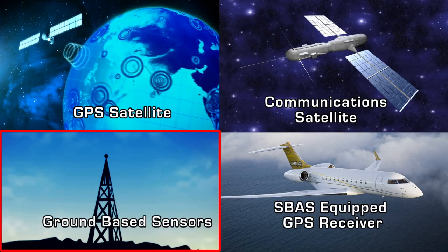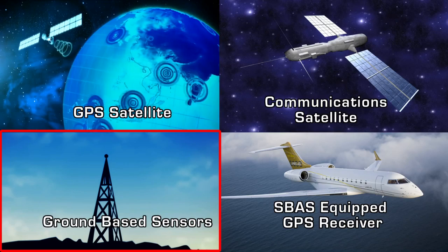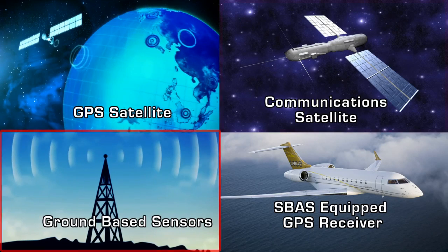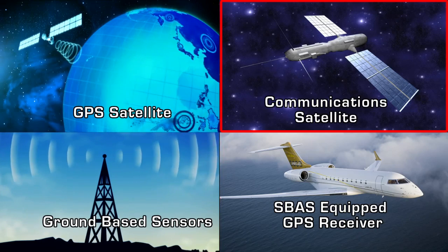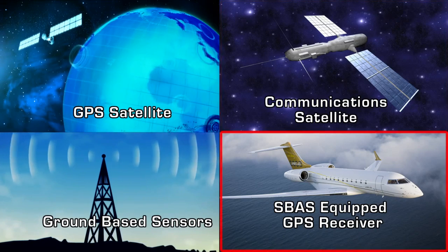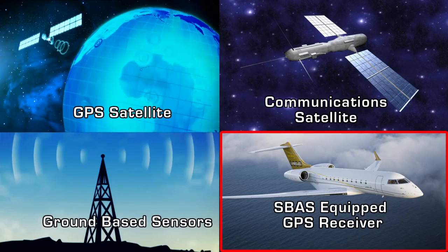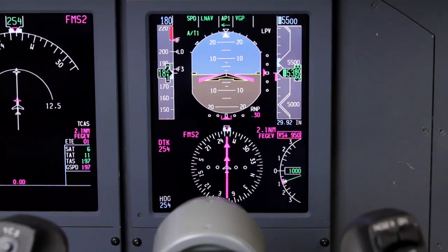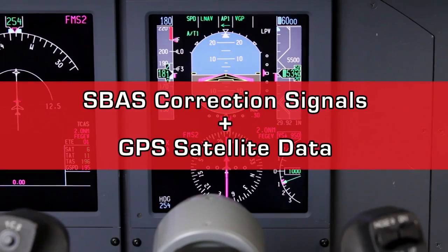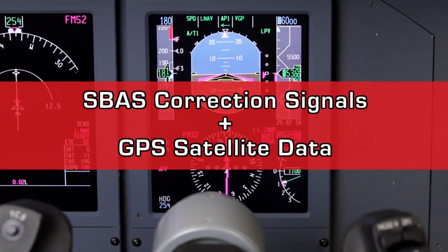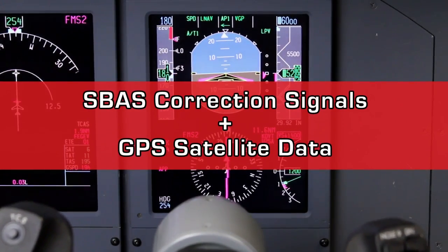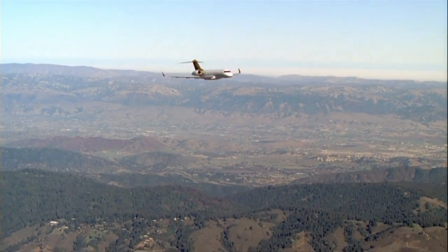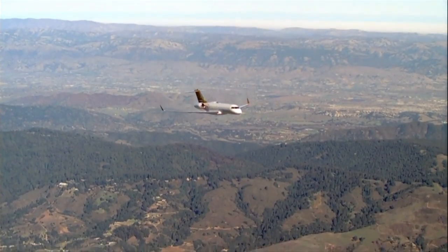The ground-based sensors gather GPS signals and apply a correction to them. The correction data is then sent to a communications satellite, which in turn broadcasts the information to an SBAS-equipped GPS receiver onboard an aircraft. The GPS receiver combines the SBAS correction signals with data from GPS satellites and produces highly accurate position data that is then used to fly RNAV approaches to LPV minimums.